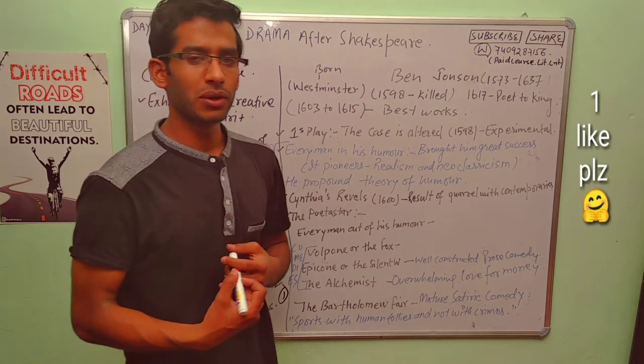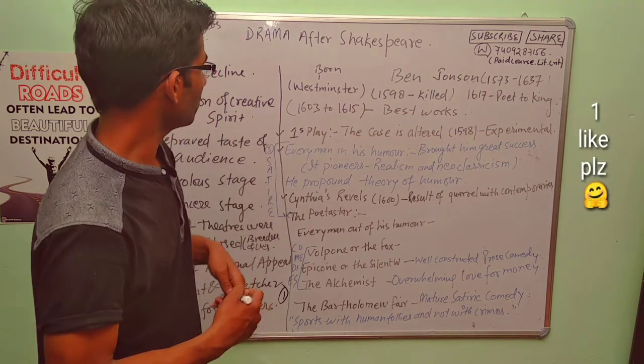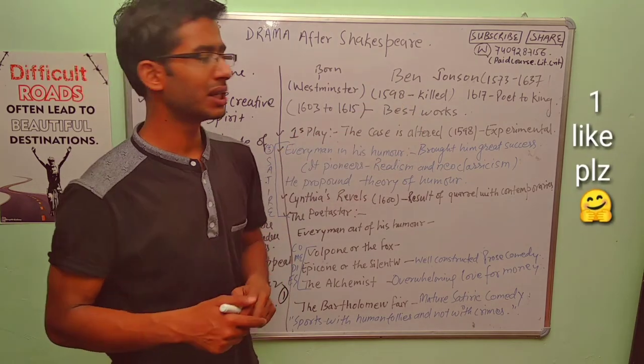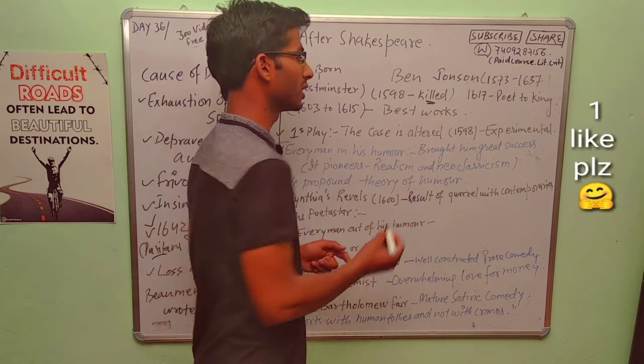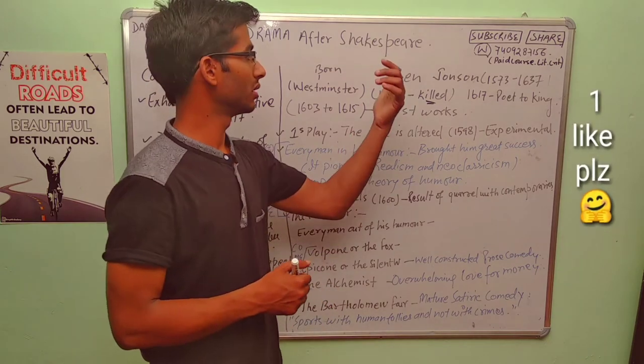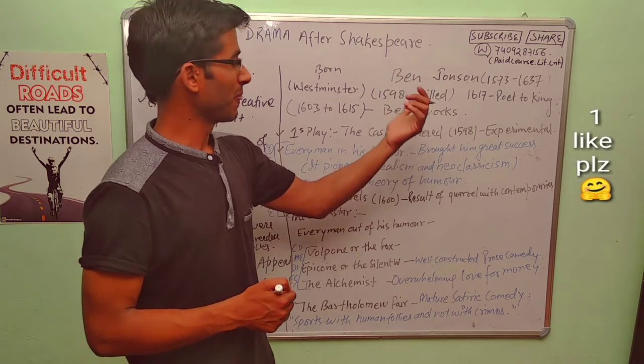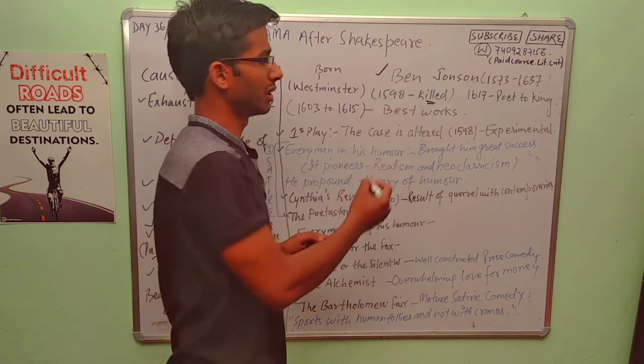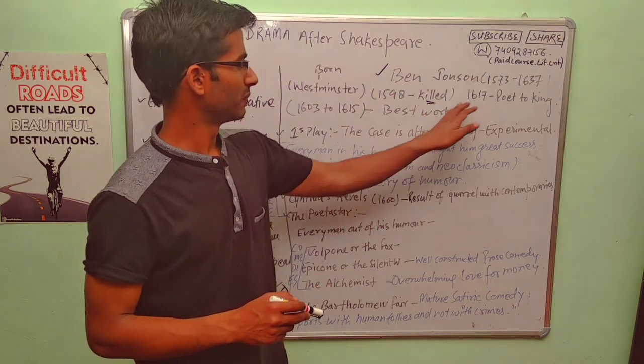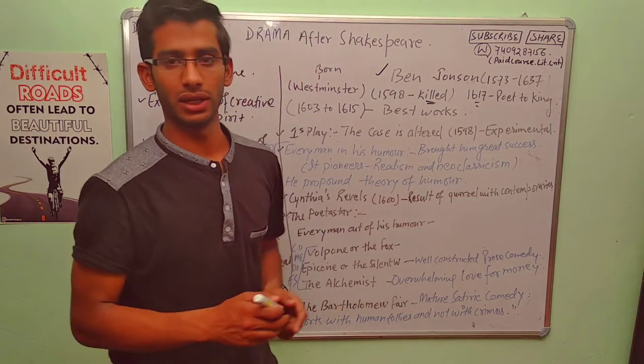Now let's talk about Ben Jonson who is important after Shakespeare. He was born in 1573, died in 1637. He was born in Westminster. In 1598 he killed his fellow artist in a duel. So the answer was Ben Jonson in 1598. I saw that in UPPGT. This was asked, like who killed his fellow artist in a duel. So answer was Ben Jonson in 1598. 1617, Poet to King. He became Poet to King.